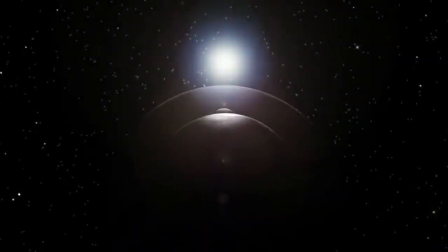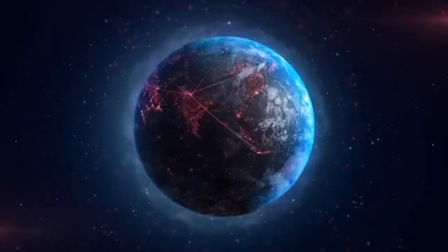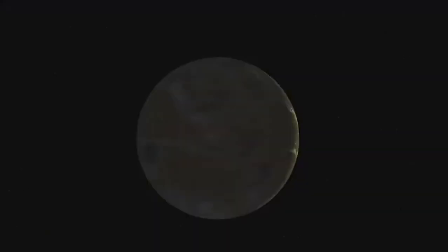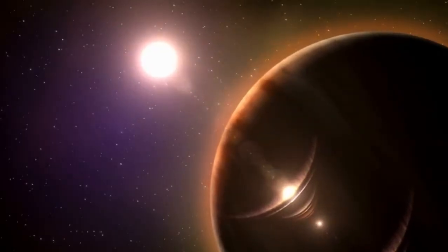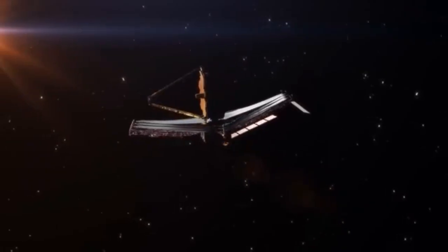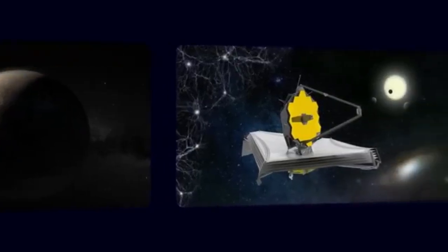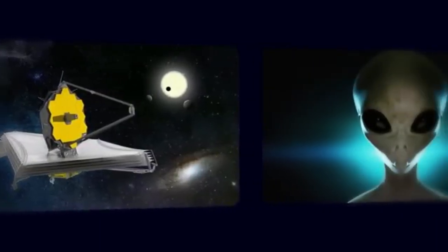Let's set the stage. Proxima Centauri b, or Proxima b for short, orbits the red dwarf star Proxima Centauri, just 4.2 light-years away. That's about 25 trillion miles, a distance so vast it's hard to wrap your mind around. This planet, discovered in 2016, is a rocky world, roughly 1.3 times Earth's mass, nestled in the habitable zone, where liquid water, the key to life as we know it, could exist.